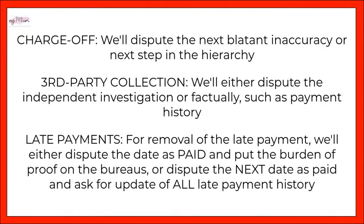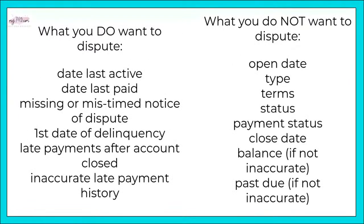Here are the steps to disputing and removing verified accounts. A bit of a warning: if you don't know how an account should and should not report, you may make mistakes. For charge-offs, dispute the next blatant inaccuracy or next step in the hierarchy. Third-party collections: dispute the independent investigation or factually, such as payment history. For removal of late payments, dispute the date as paid and put the burden of proof on the bureaus, or dispute the next date as paid and ask for an update of all late payment history. What you should dispute: date last active, date last paid, missing or mistimed notice of dispute, first date of delinquency, late payment after account was closed, and inaccurate late payment history.